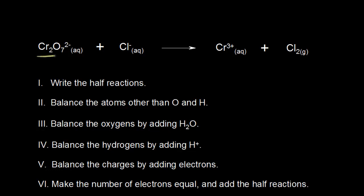We start with the dichromate anion. Oxygen has an oxidation state of negative 2, and we have 7 oxygens, so negative 2 times 7 gives us negative 14. The total for the entire anion has to equal negative 2, which is the charge on the dichromate anion. Therefore, we must have plus 12 for all of our chromiums. Plus 12 and minus 14 give us negative 2. Since we have two chromiums, each one must be plus 6 — that's the oxidation state for chromium.